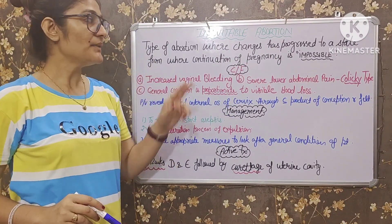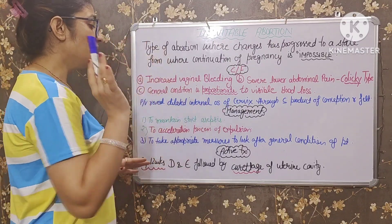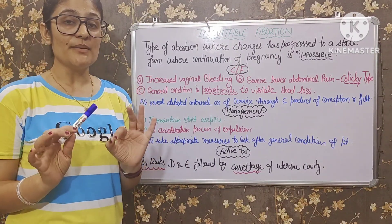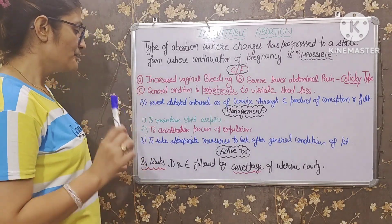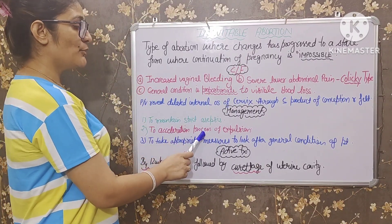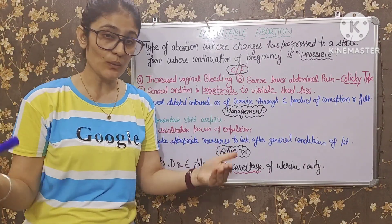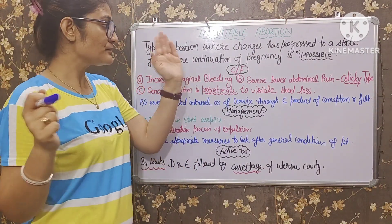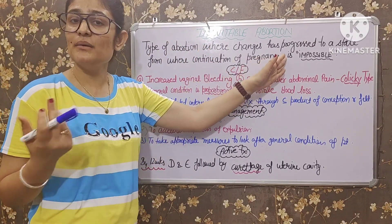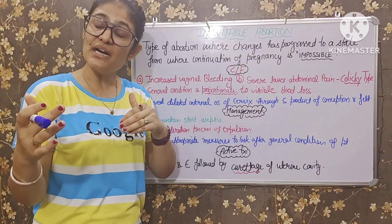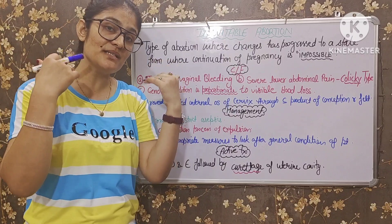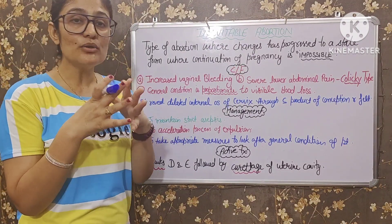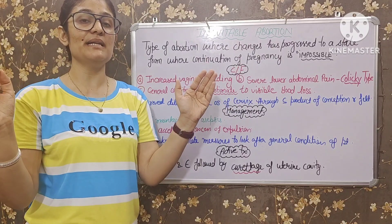Now we come to the management. Inevitable abortion ki management mein sabse pehle strict asepsis maintain karenge. Second: to accelerate the process of expulsion, kyonki expulsion ka process start ho gaya hai. Is state ko hum revert back nahin kar sakte — continuation of pregnancy impossible hai. Jo process start ho gaya hai usse aur aage accelerate karwana padega, kyonki internal os dilate ho gayi hai.